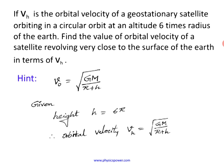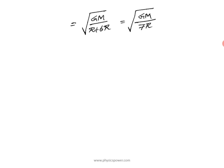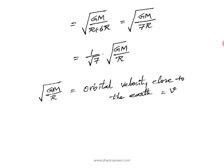Separating the denominator: Vh = (1/√7) × square root of GM/R. The term square root of GM/R with h = 0 is the orbital velocity very close to the surface — call it V. So Vh = (1/√7) × V. Since they ask for V, rearranging gives V = √7 × Vh. It is a simple problem.